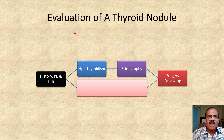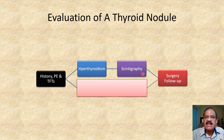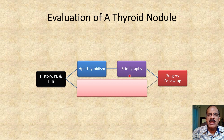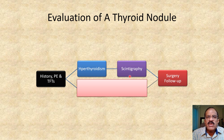For evaluation of a thyroid nodule, you take history, do physical examination, and perform thyroid function tests. If all this suggests hyperthyroidism — meaning the thyroid nodule is functioning and producing thyroxine — ideally you should do scintigraphy. The thyroid scan will show a clearly hot nodule and the rest of the thyroid gland is suppressed. Why? Because the hot nodule is producing thyroxine, inhibiting TSH, and low TSH will only inhibit the normal thyroid tissue, not the nodule, because the nodule is autonomous. So in the background of very low radioactivity you will see a nodule which is hyperfunctioning, outlining the tumor.